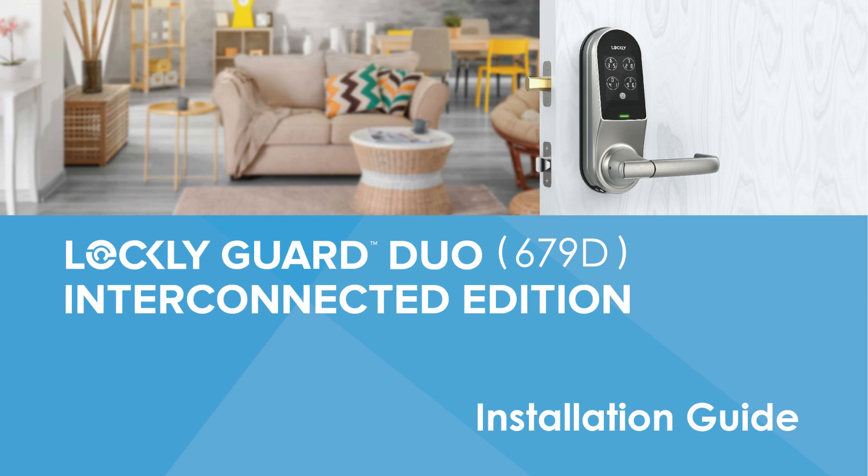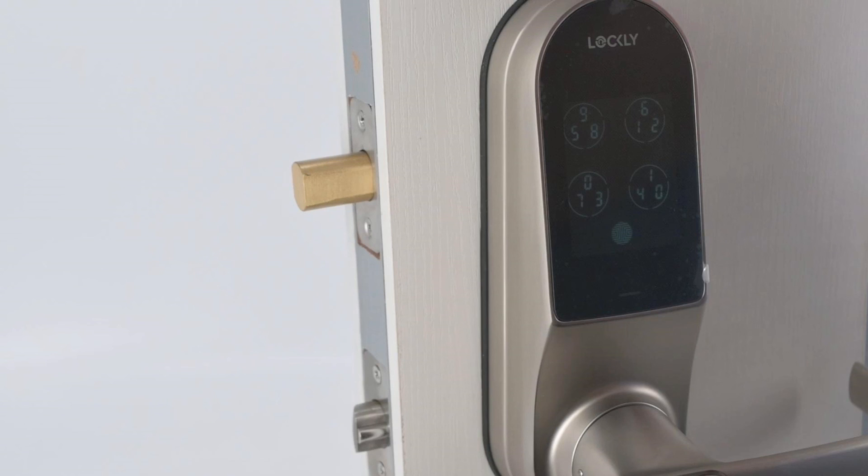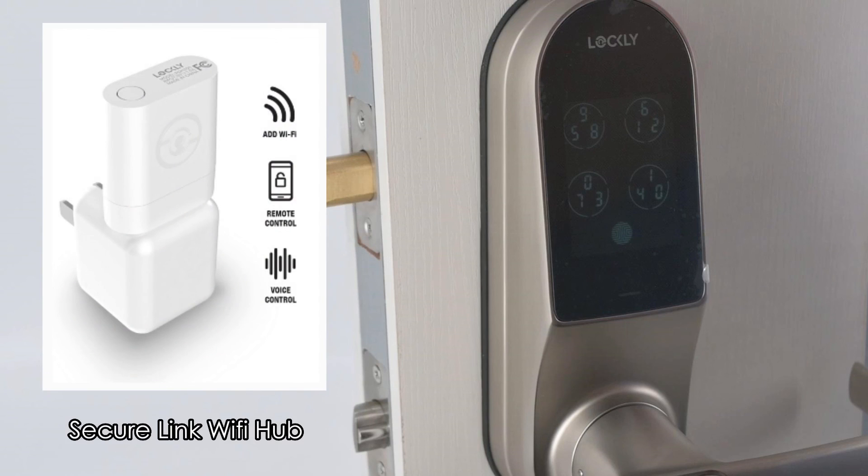Congratulations! You have completed the LocklyGuard Duo 679D Interconnected Edition Physical Lock Installation. To enable live monitoring, you would need to pair LocklyGuard Duo with the secure link Wi-Fi hub included in the box.